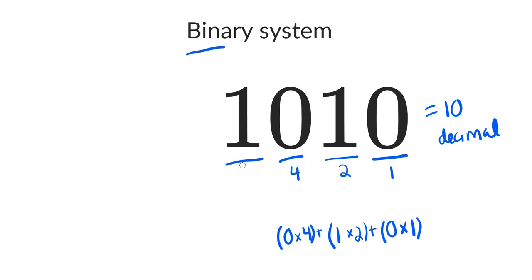Finally, this fourth bit here, this is the 8's place, and there's a 1 here. So we're going to multiply 1 times 8, add that to everything else, we end up having 8 plus 2, which equals decimal 10.